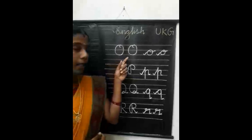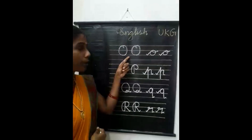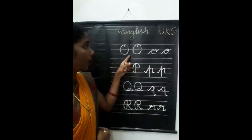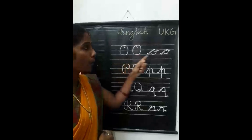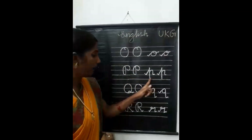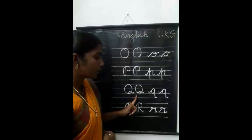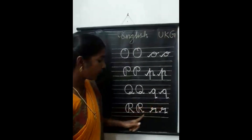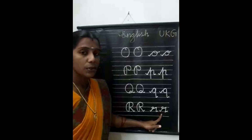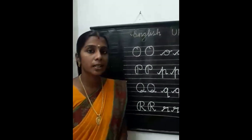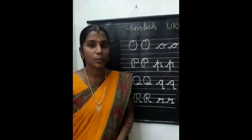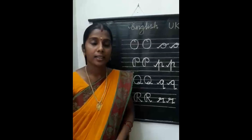Listen once again — say after me: capital letter O, small letter O, capital letter P, small letter P, capital letter Q, small letter Q, capital letter R, small letter R. Are you understood, children? Yes. Take practice at home. Thank you.